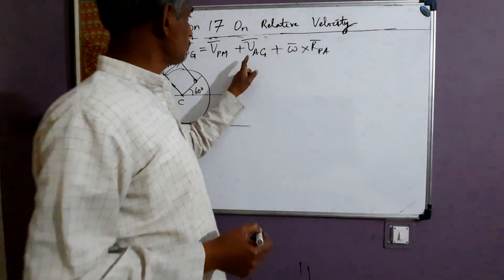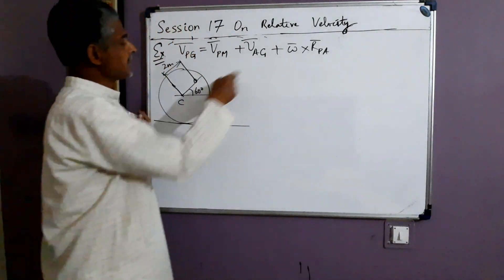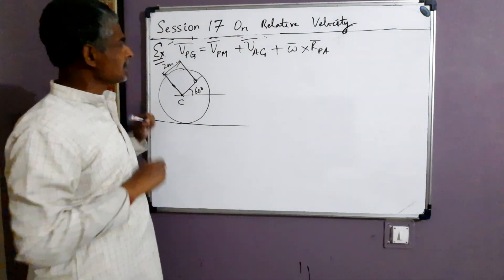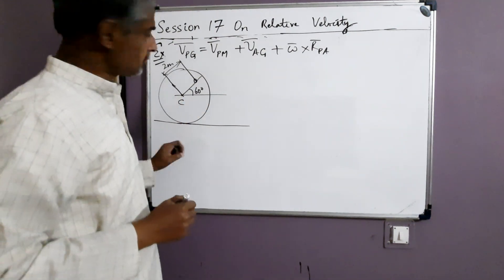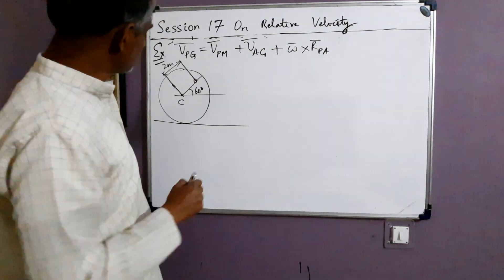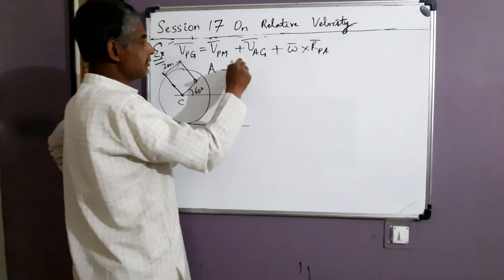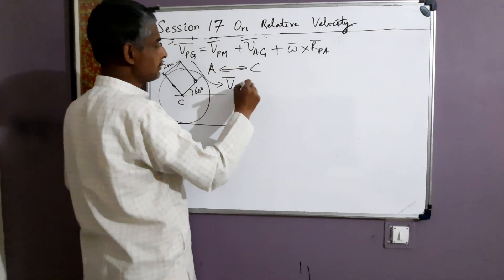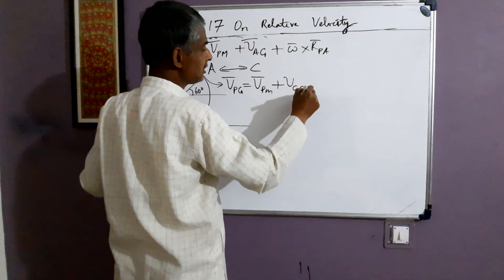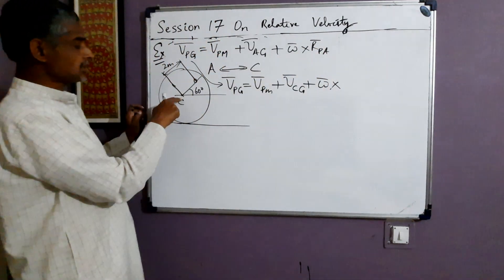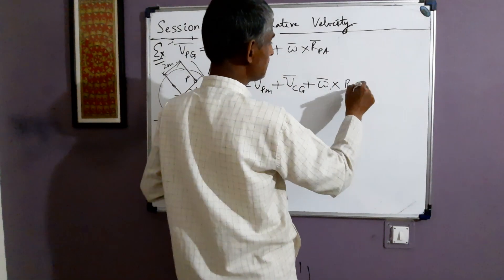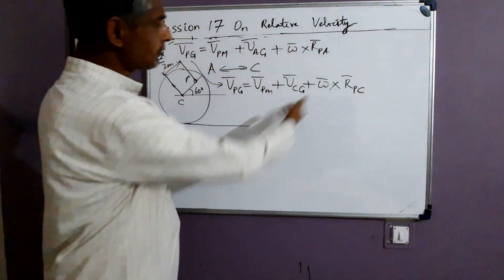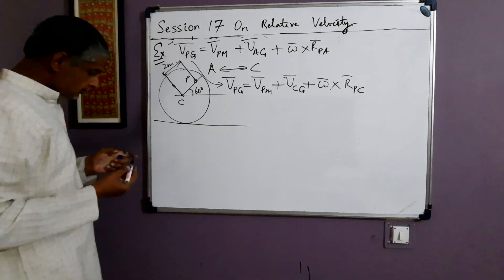The angular velocity omega is 5 radians per second clockwise. By the right-hand thumb rule, clockwise sense means thumb points inward along negative z-axis, so vector omega = −5 k-hat radians per second. RPC is the vector from center C to insect P (2 meters at 60°): RPC = 2cos60° i-hat + 2sin60° j-hat = i-hat + √3 j-hat meters. Then omega cross RPC = (−5 k-hat) cross (i-hat + √3 j-hat) = −5 j-hat + 5√3 i-hat.